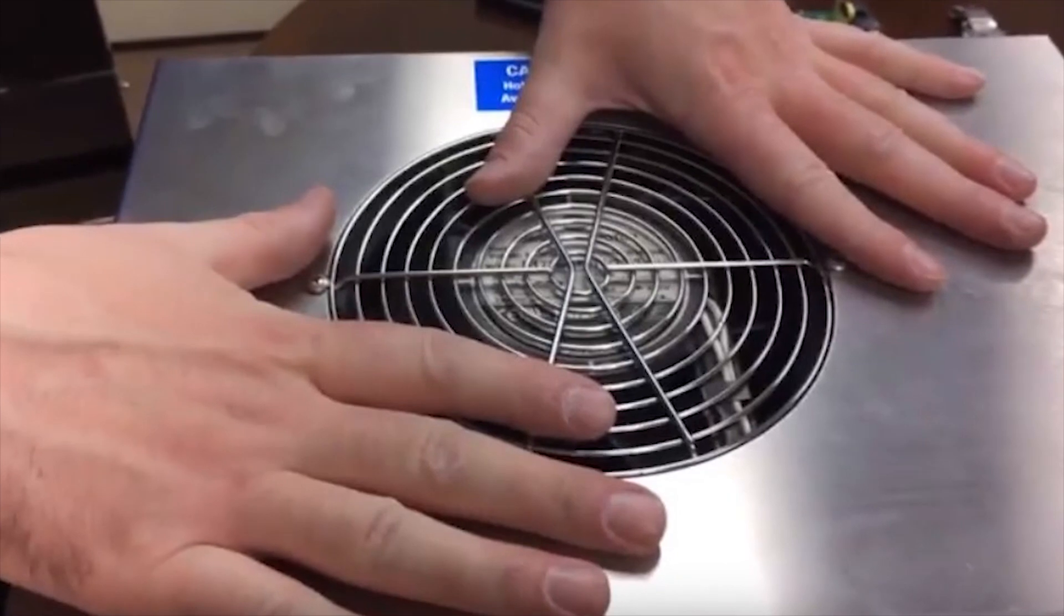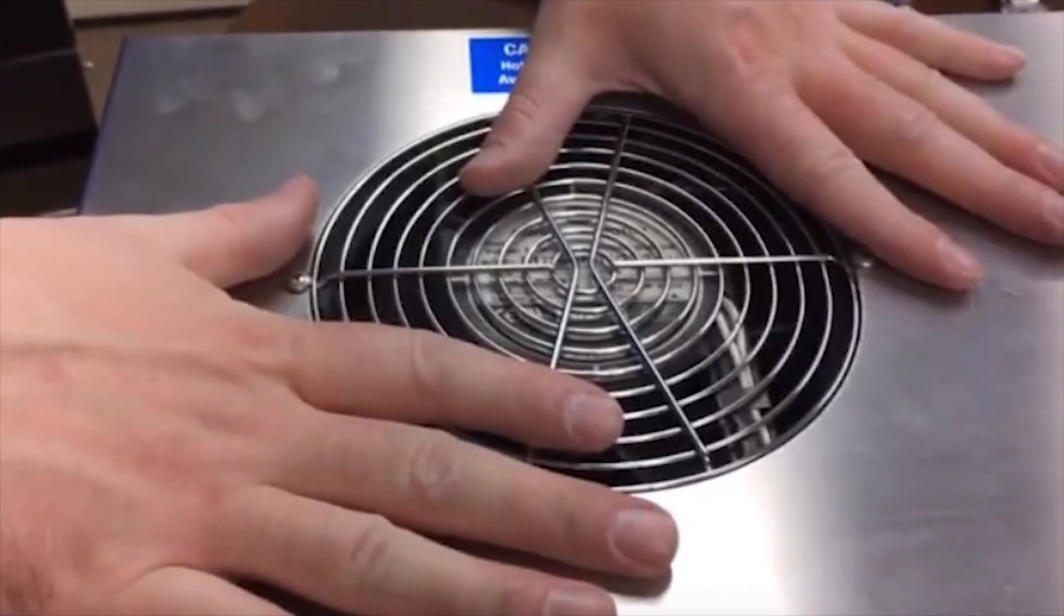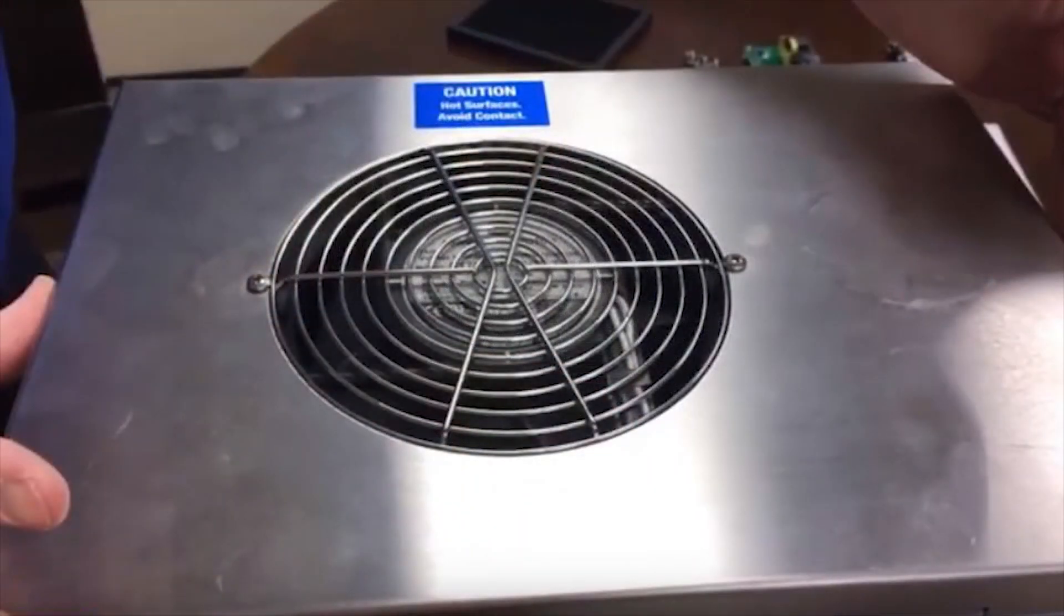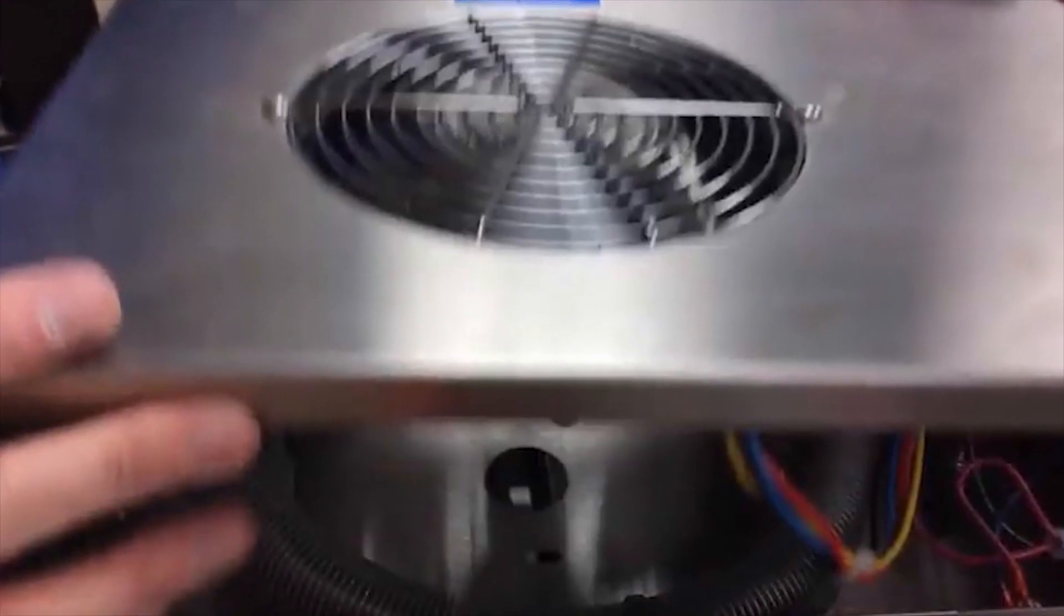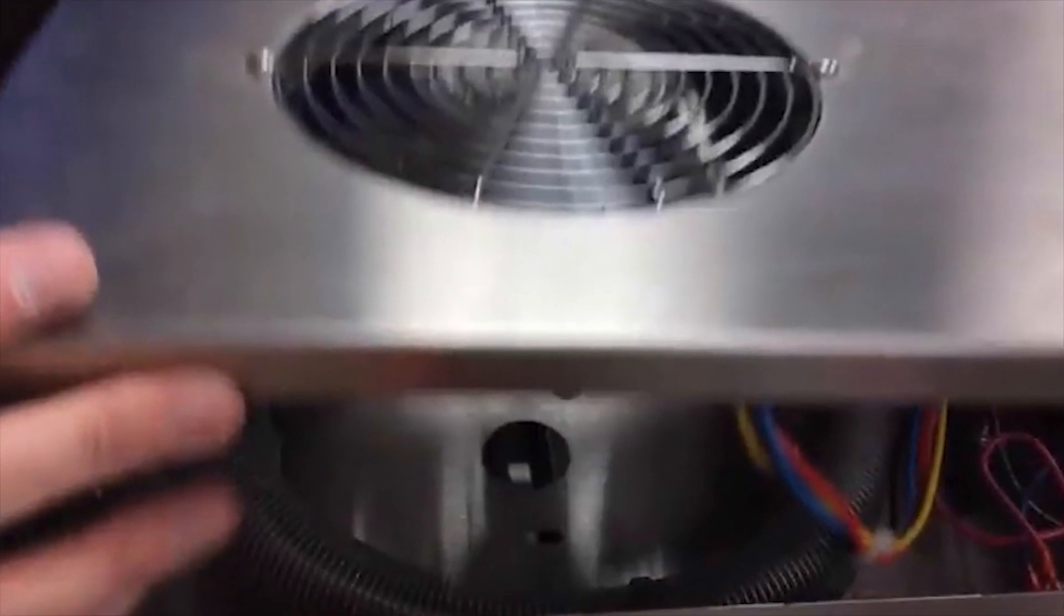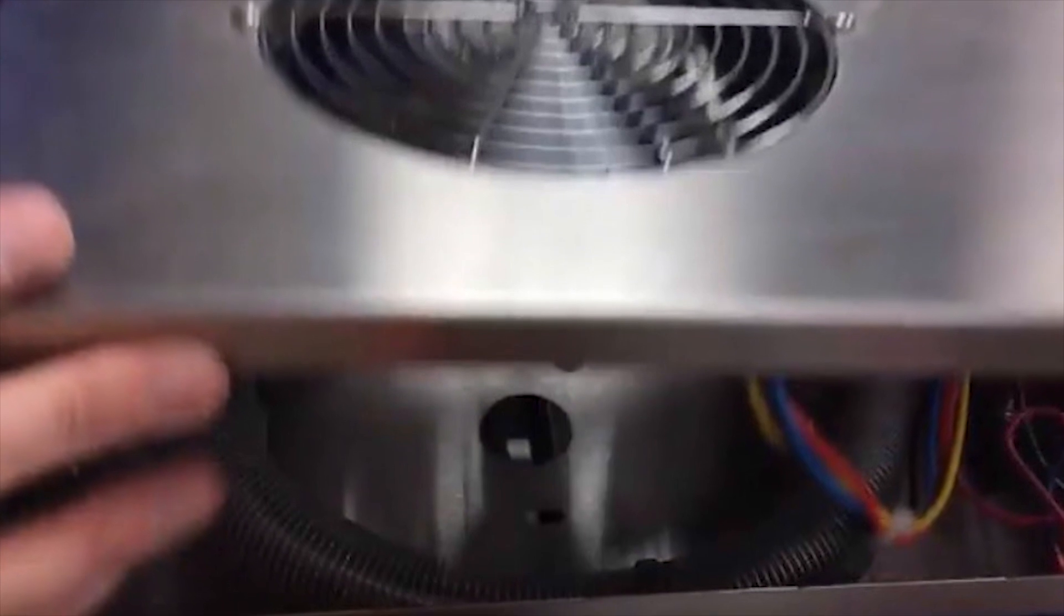The first thing you'll need to do is remove the top section of your distiller by removing the screws along the edges. Once you've done that, it will lift off with the fan inside of it and then you can set it off to the side.